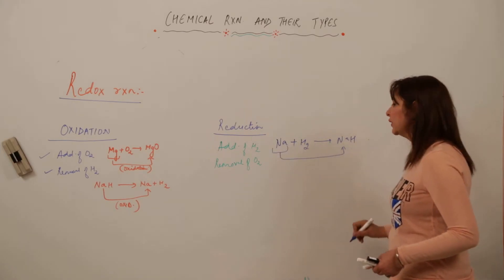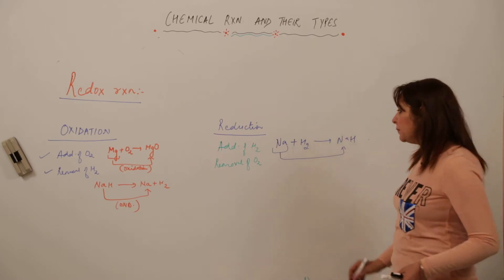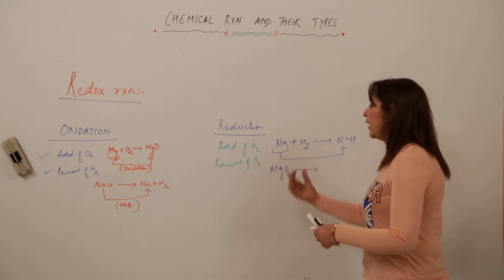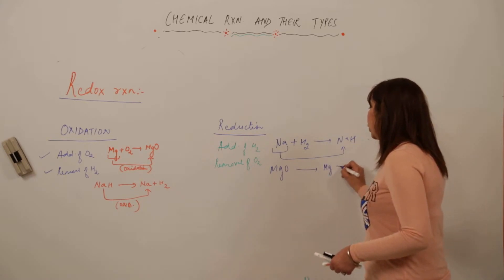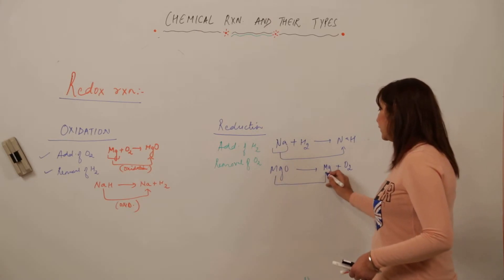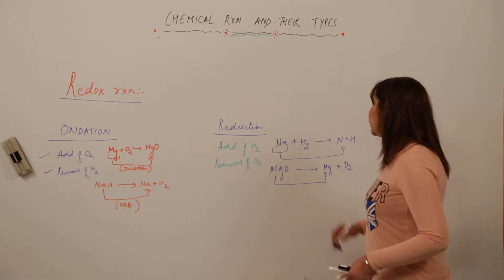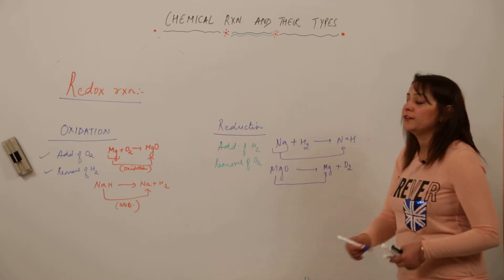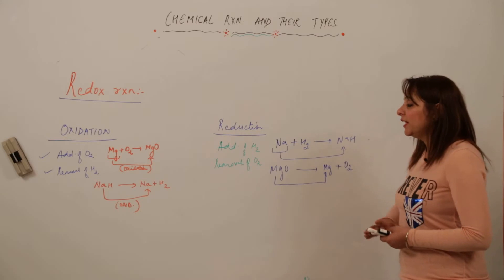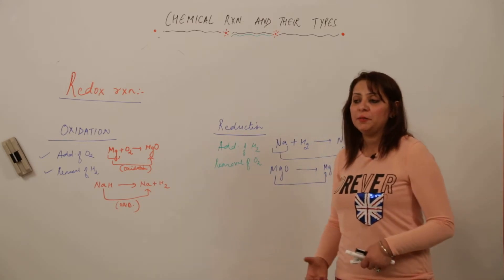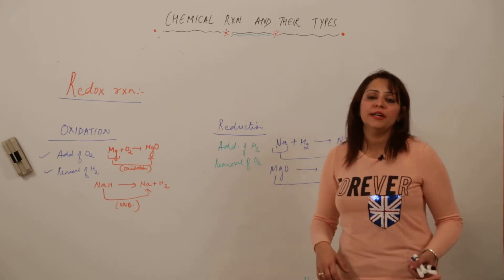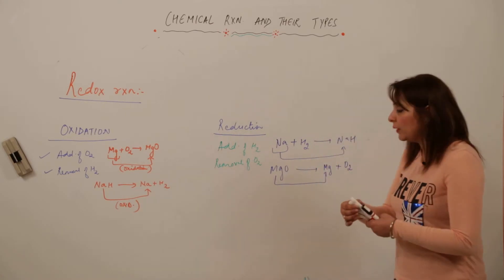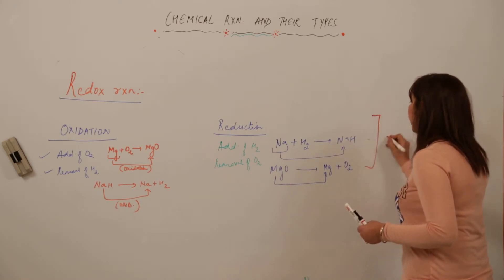Similarly, if I have magnesium oxide and by heating it I separate magnesium and oxygen, then on the product side oxygen is not present — oxygen has been removed. So this falls under the category of reduction. This addition of oxygen or electronegative element, or removal of hydrogen or electropositive element (and vice versa), is the classical concept to explain oxidation and reduction.